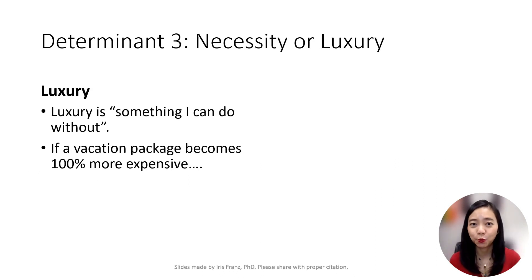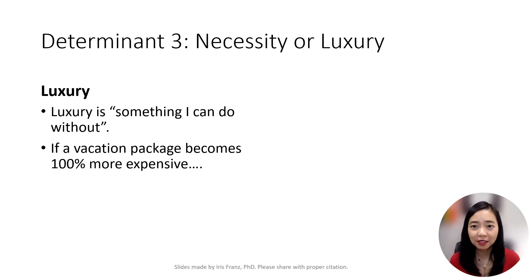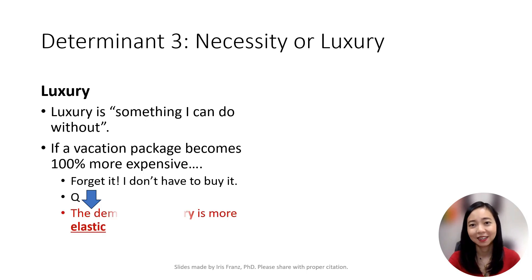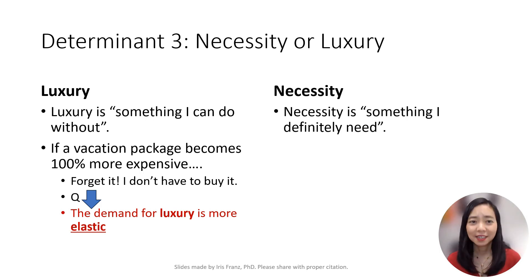The next determinant is whether the item is a necessity or a luxury. If the item is a luxury, then it is something that you can do without. For example, if you are thinking about booking a vacation but the price of the vacation package has doubled, what do you do? You can forego the vacation easily, as you can do without it. So the demand for luxury is relatively price elastic.